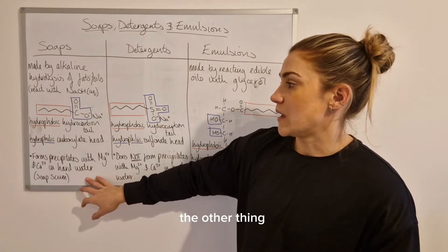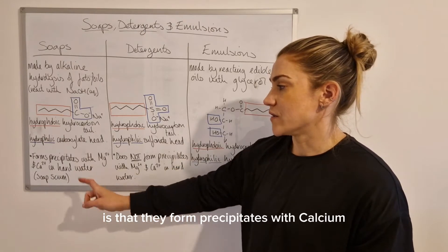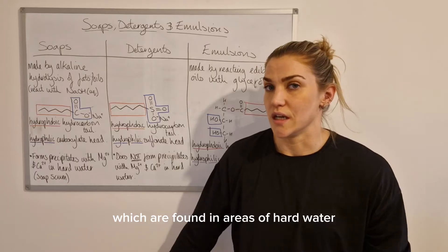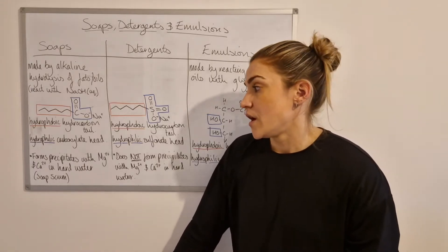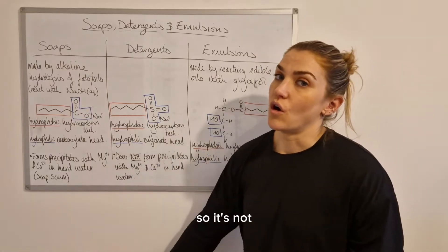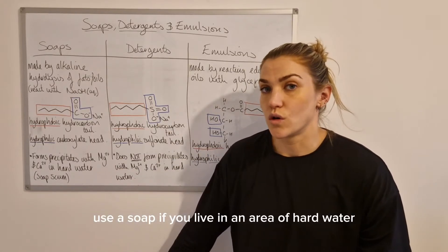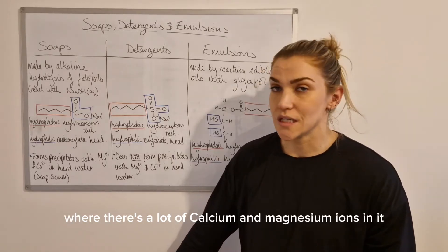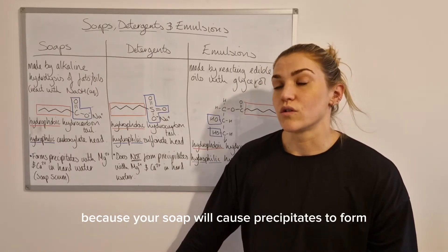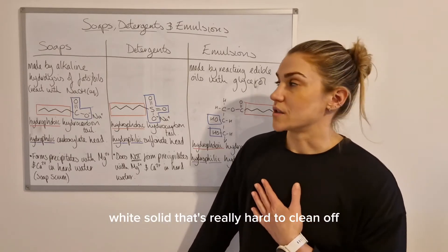The other thing you'll need to know about soaps is that they form precipitates with calcium and magnesium ions, which are found in areas of hard water. That precipitate is also known as soap scum, so it's not a good idea to use soap if you live in an area of hard water because your soap will cause precipitates to form - it's like a sticky white solid that's really hard to clean off.